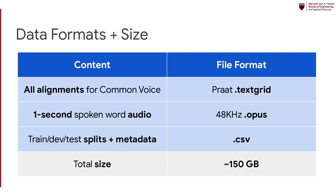Our dataset includes all per-word timing estimates for Common Voice as Praat text grids. We use the Opus compression format, and our total dataset size is 150 gigabytes.